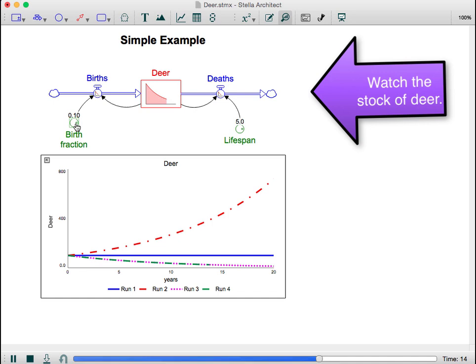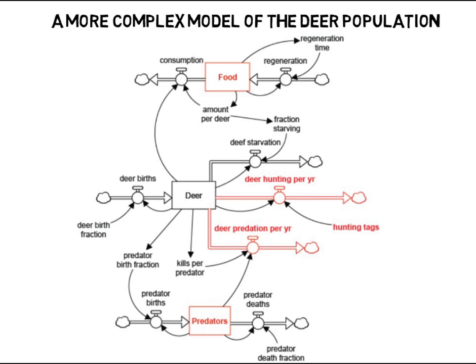Yet this model is very limited. Let's say there was a problem with the deer population — perhaps there are too many or too few deer. We can add other aspects that affect the population in order to understand the problem and consider leverage to improve the situation. These might include elements like food for the deer, predators, and more.